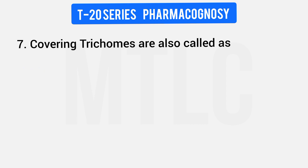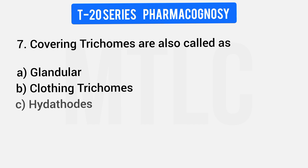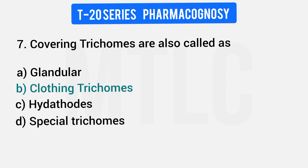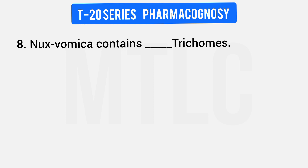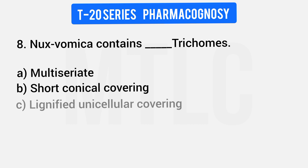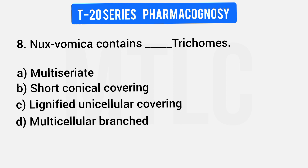Covering trichomes are also called as: Glandular trichomes, Clothing trichomes, Hydathodes, or Special trichomes. The answer is clothing trichomes. Next: Nux vomica contains which type of trichomes? Options: Multiseriate covering, Short conical covering, Lignified unicellular covering, Multicellular branched. The answer is lignified unicellular covering trichomes.